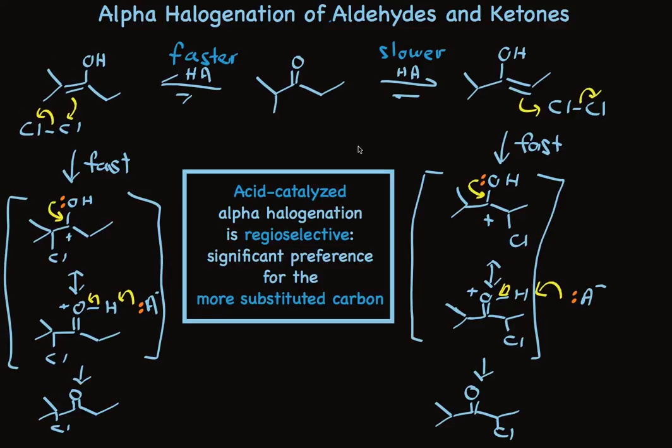The bottom line is that acid-catalyzed alpha halogenation is regioselective — it has a significant preference for the more substituted carbon.